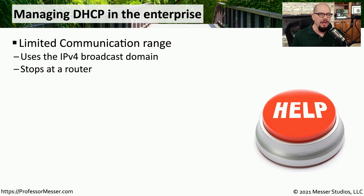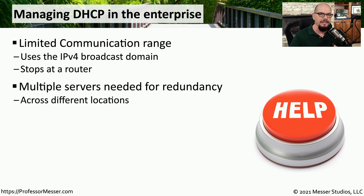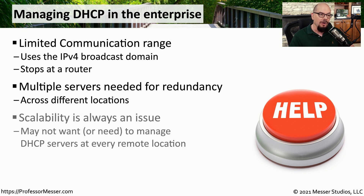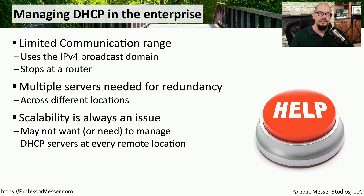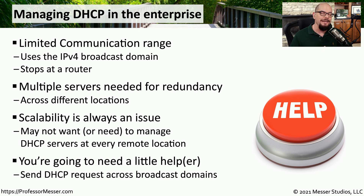As we went through that four-step process, you may have noticed that everything was sent through broadcasts, and broadcasts have no way to traverse routers. In a large enterprise environment, this becomes difficult to manage because you don't want to put individual DHCP servers on every local subnet. Instead, we want redundancy with multiple DHCP servers to handle the load. So we use what's called a DHCP relay, or IP helper function, to relay the message from the broadcast directly to a central DHCP server.